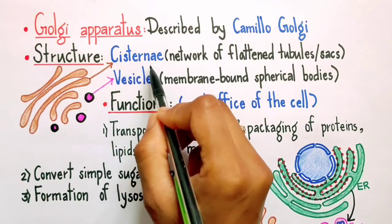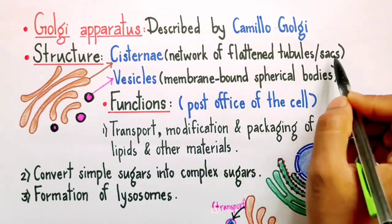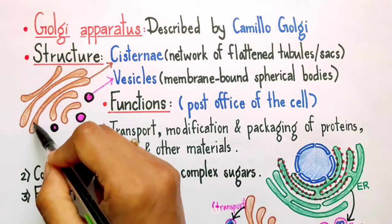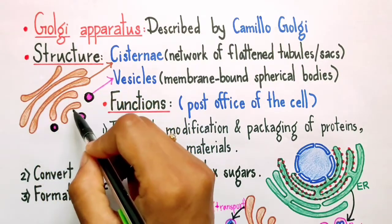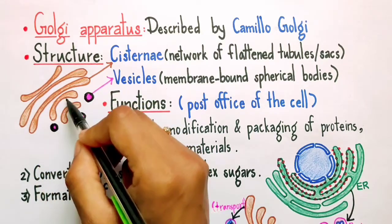Cisternae is a network of flattened tubules or sacs. So if you can observe here, you can see all these are flattened tubules. These are cisternae and they are arranged parallel to each other.